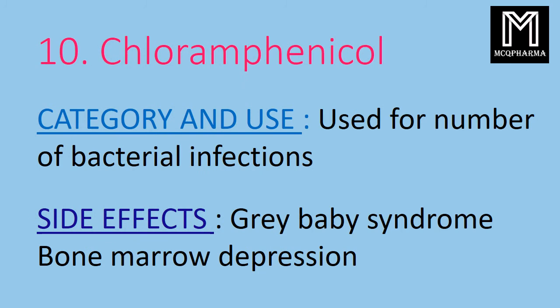Chloramphenicol. Category and use: used for a number of bacterial infections. Side effects: grey baby syndrome, bone marrow depression.